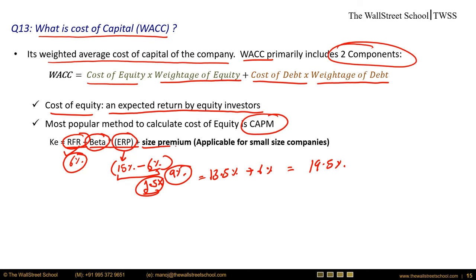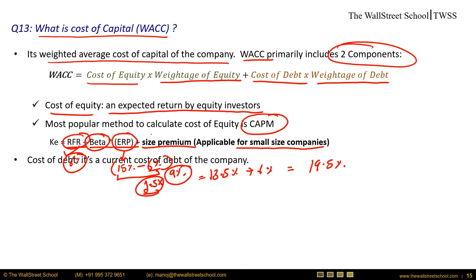One additional adjustment is the size premium, applicable only for small-size companies where shareholders expect additional return beyond what the CAPM equation calculates. Small-cap companies have a tendency to outperform the minimum required return, captured through the size premium. This premium is not added for large-cap companies.